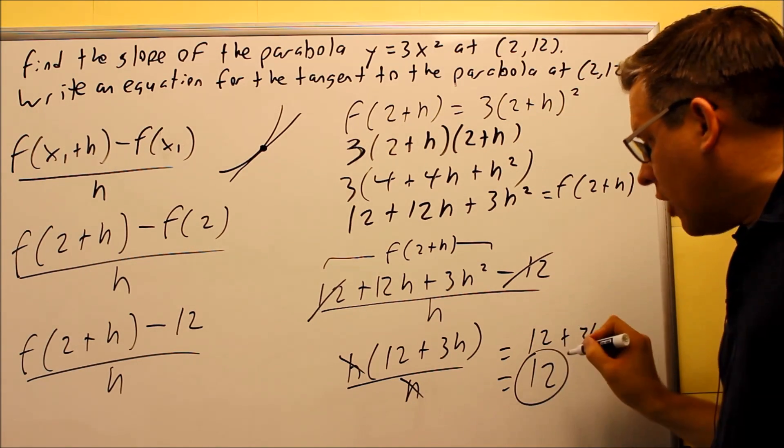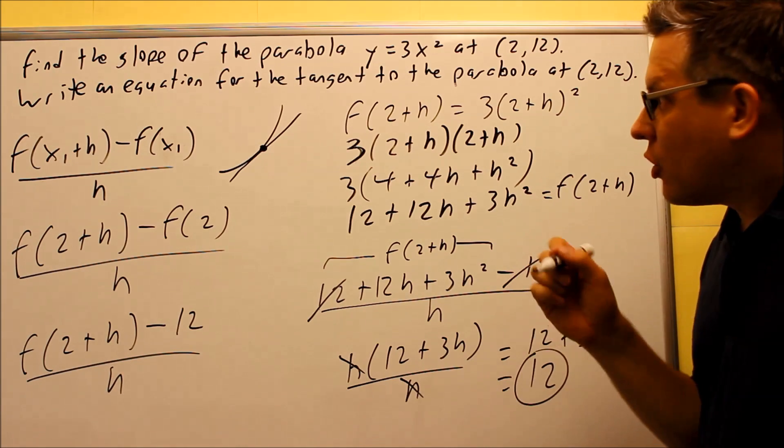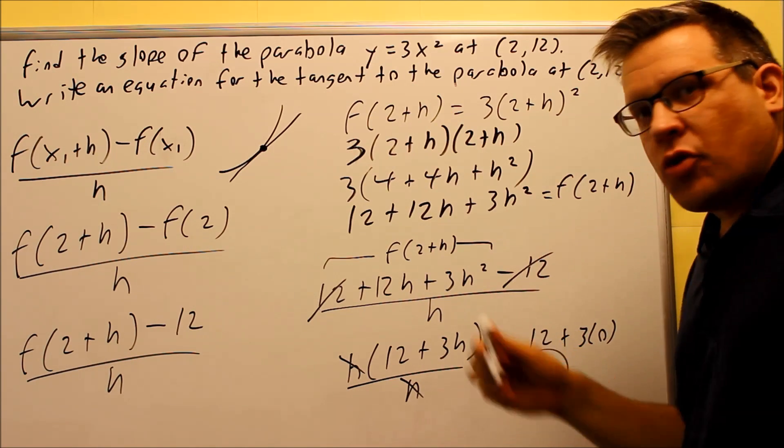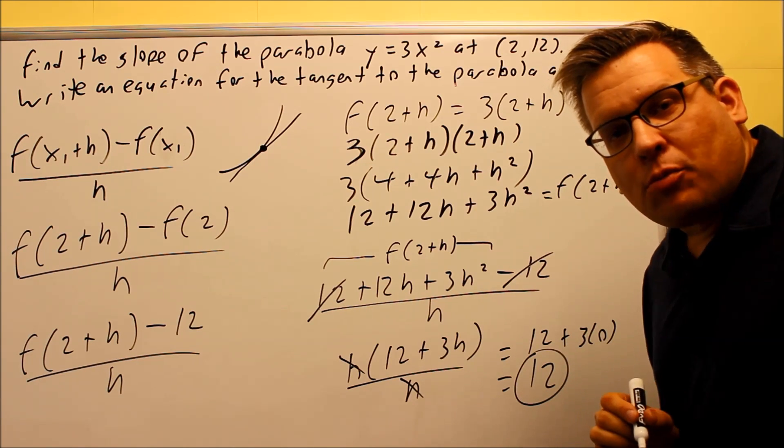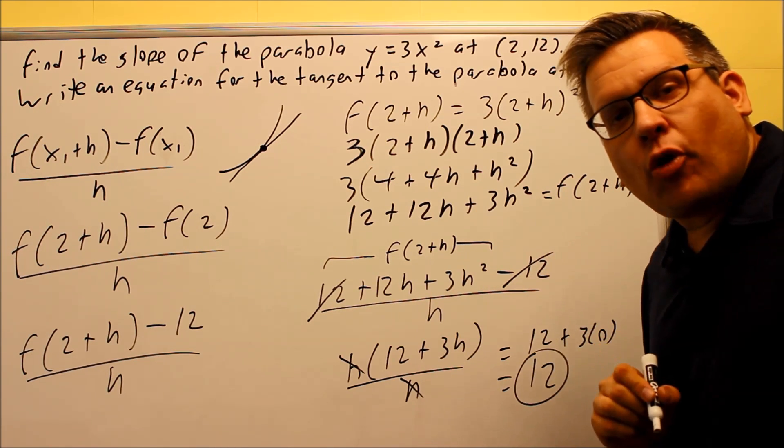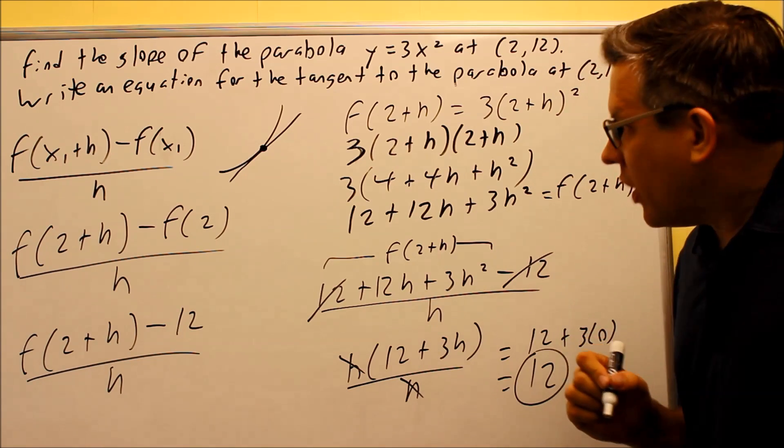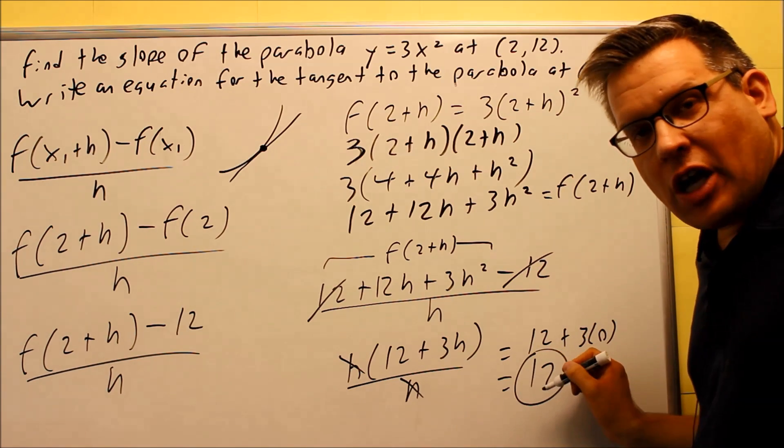So we can use 12 now in order to find the equation of the tangent line. So in order to do the equation of the tangent line, we're going to have to go back to something you've seen previously. Obviously, it's the point-slope formula. That's whenever you have a slope, which we have here, 12.